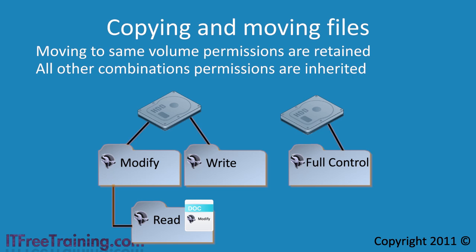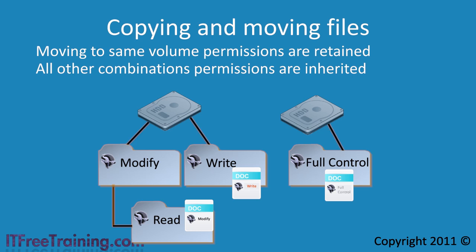For example, if you copy a file to another part of the directory tree, it will inherit the permissions from the destination folder. If you move or copy the file to another volume, it will also inherit the permissions of the destination folder. Moving files on a local system can sometimes cause unwanted side effects. For this reason, if you want to move a file on the same volume but want it to inherit the permissions of the new folder, you should copy the files to the new location and then delete the old files rather than moving. This ensures the files do not keep their old permissions.